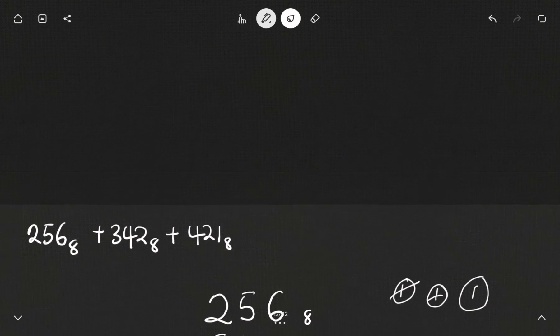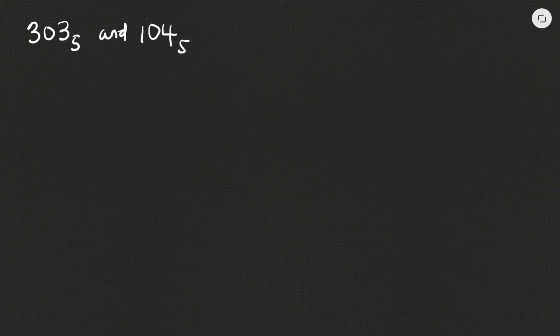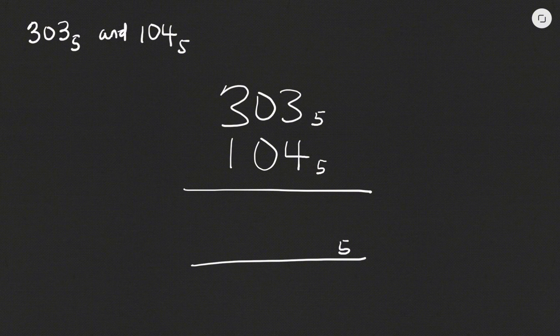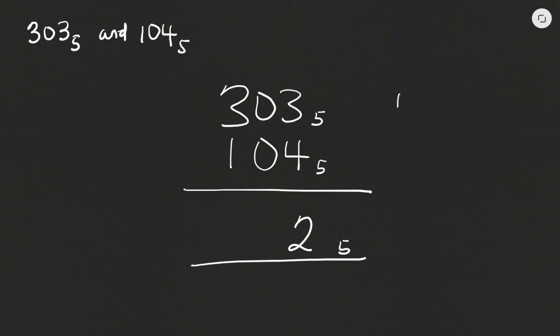Let's look at one final example. I'm to find the sum of 303 base five and 104 base five. So I have 303 in base five and 104 in base five. Three plus four will give me seven, and five will go into seven once, so I write down one and the remainder is two.